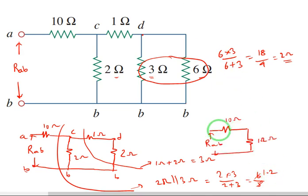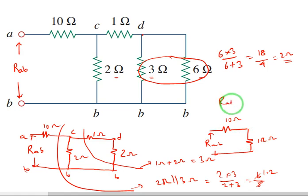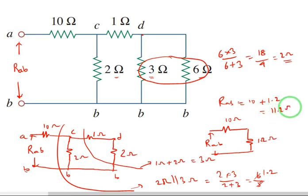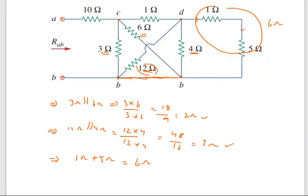Therefore the resultant circuit will have R_AB equal to 10 ohms and 1.2 ohms in series. The final answer is R_AB equals 10 plus 1.2, that is 11.2 ohms is the equivalent resistance for the given circuit.